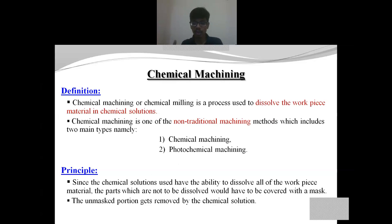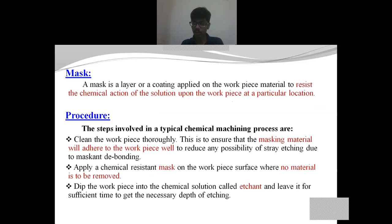We have to control the chemical reaction of the etchant solution upon the workpiece material. To control and harness this reaction, we use a resistive material called the mask. The mask is a resistive layer applied upon the workpiece material that controls or hinders the reaction between the workpiece and the etchant solution, thus allowing us to obtain the desired shape of the final product. The mask resists the etchant solution and protects the workpiece material from its reaction.